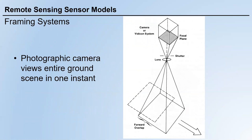Now let's talk about different types of sensors, or remote sensing sensor models. The first one is called framing systems. Some sensors are just like a cube — you can consider this cube as a sensor. This sensor moves along a direction, and there is a shutter and a lens. This is just like a camera you use every day. After each opening and closing of the shutter, there is a photo — in remote sensing, we call it an image.